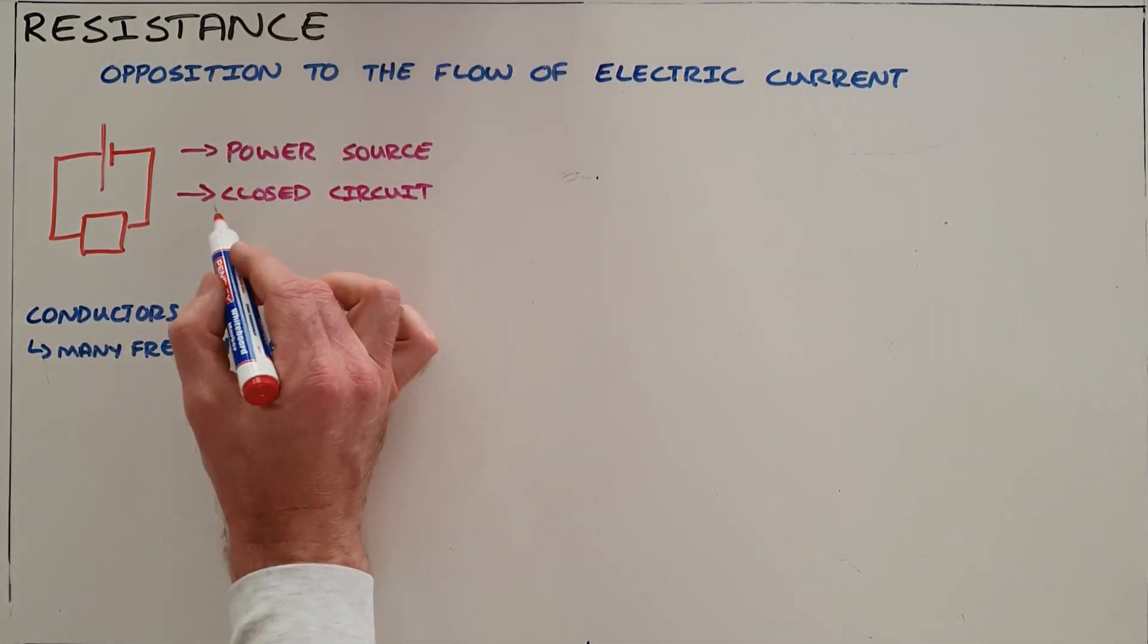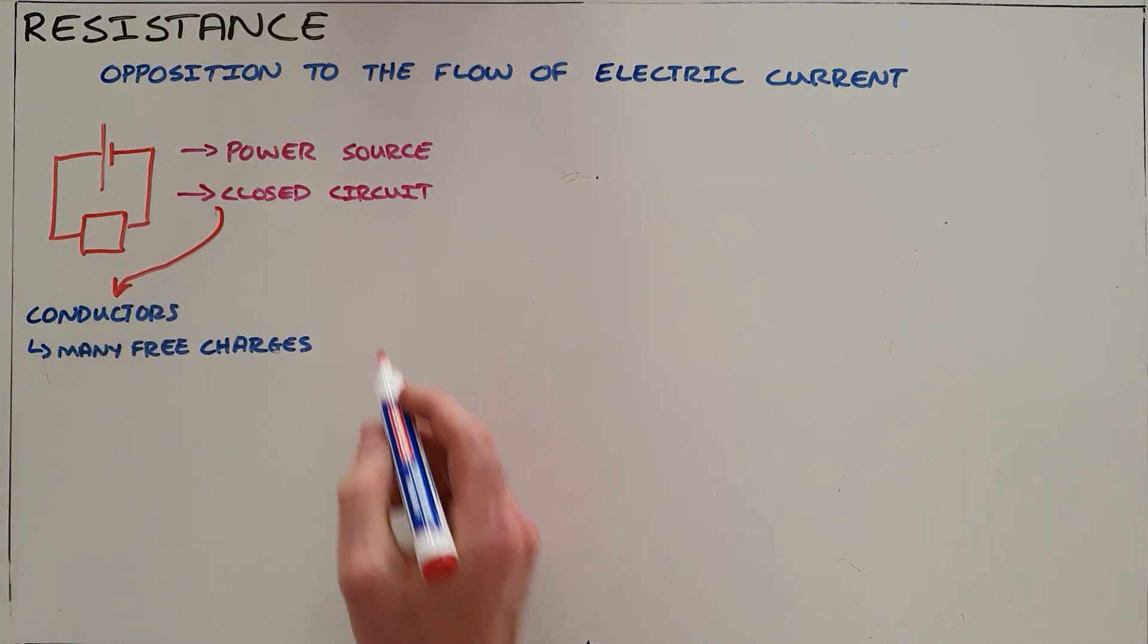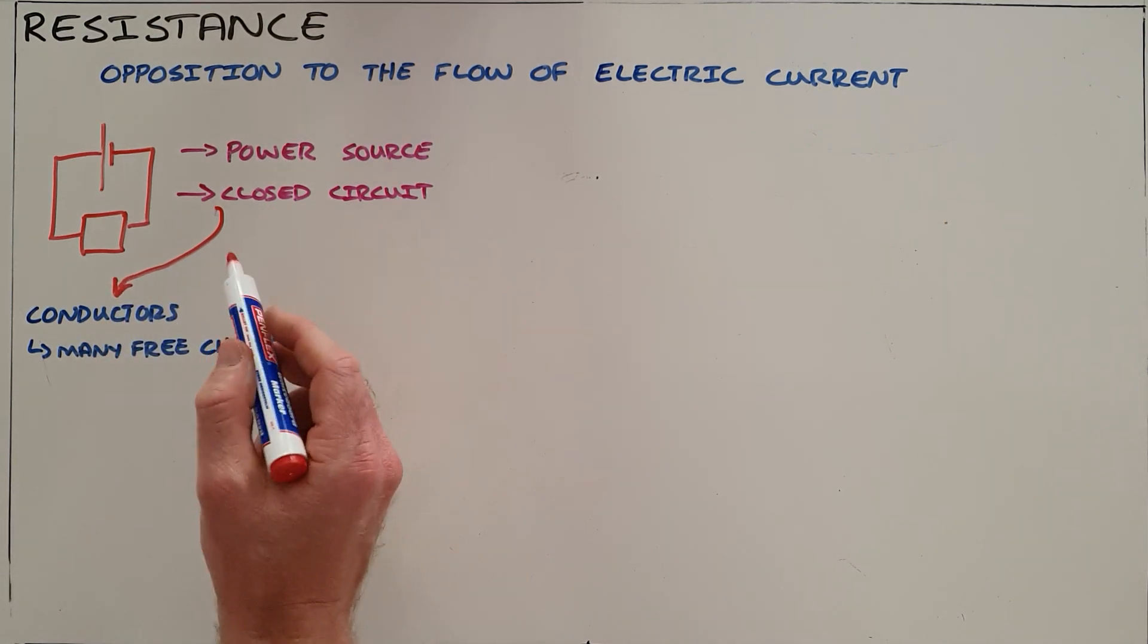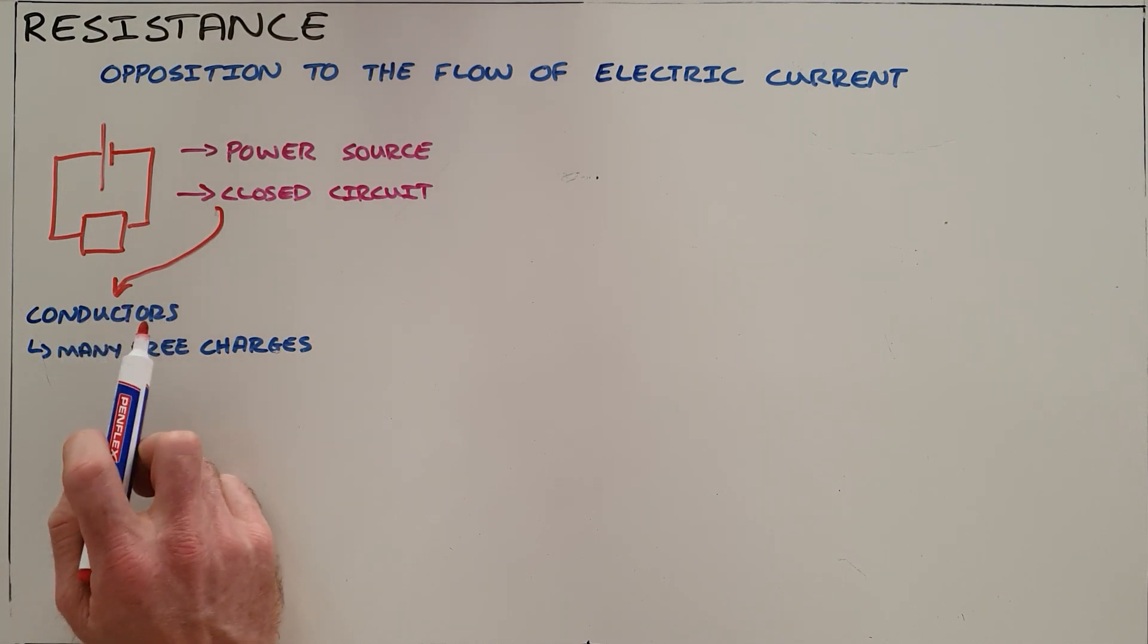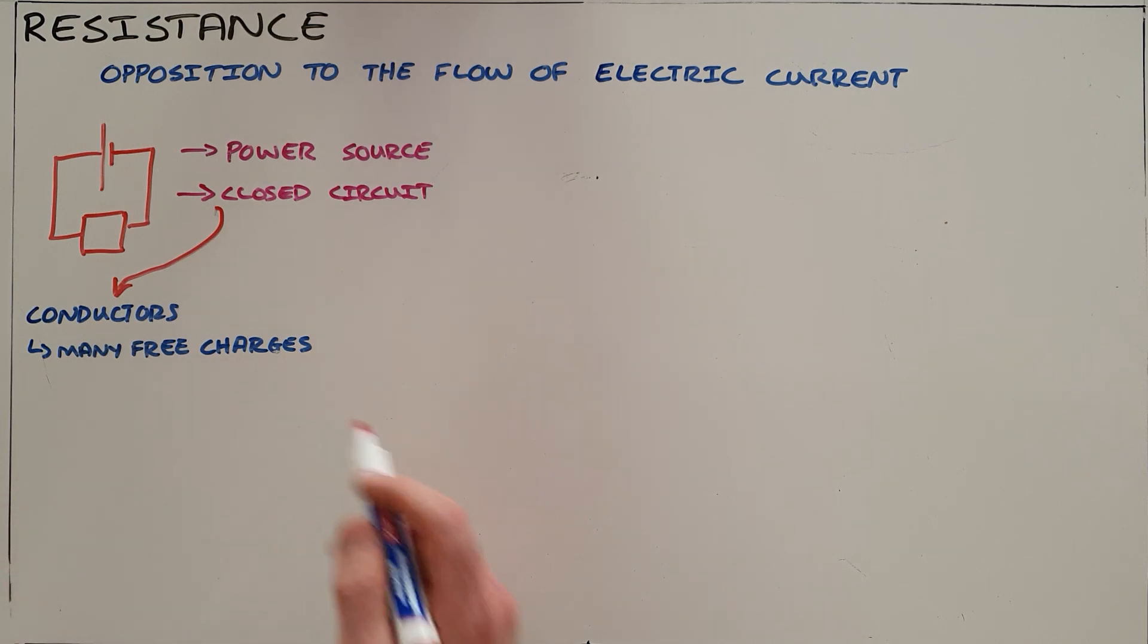That closed circuit is usually created with conductors. We normally use copper wire as our conductor. Essentially they are conductors because they have many free charges, often electrons, that allow electrical energy to be transferred through that material very easily.